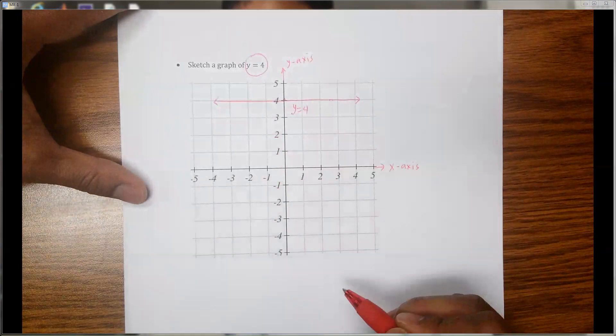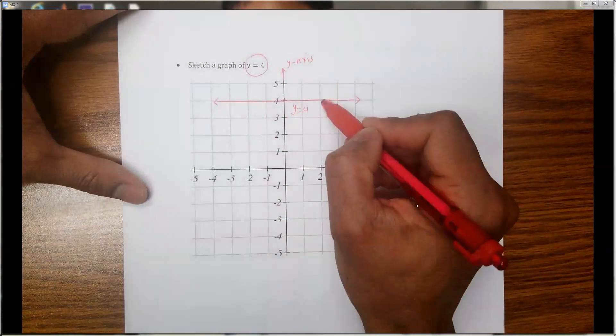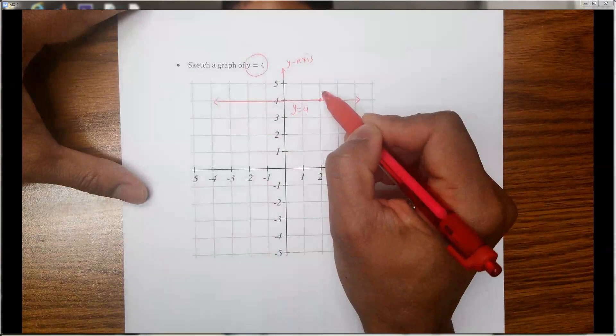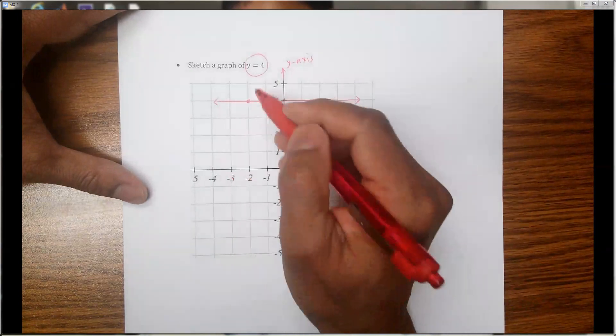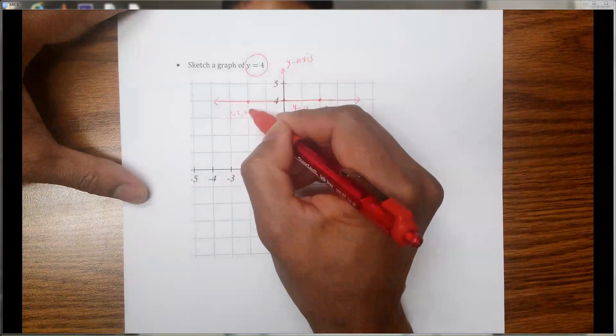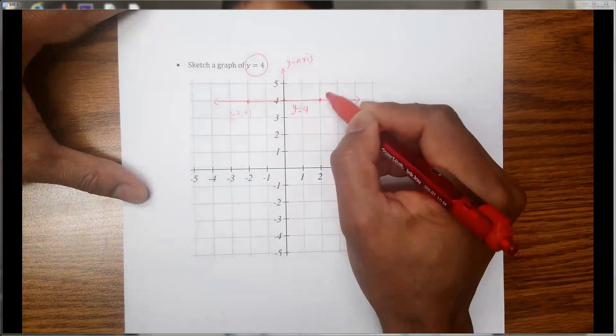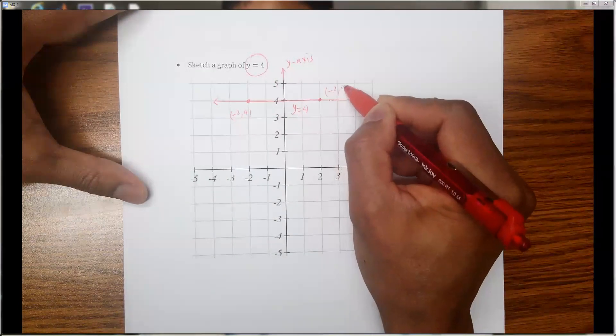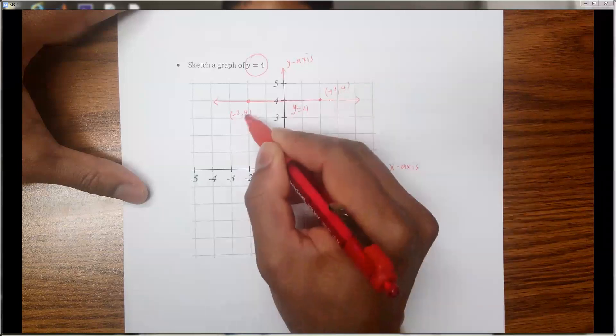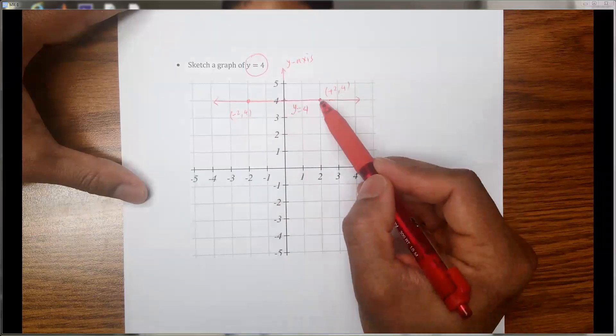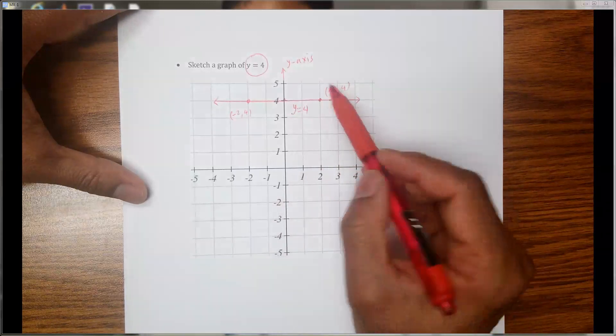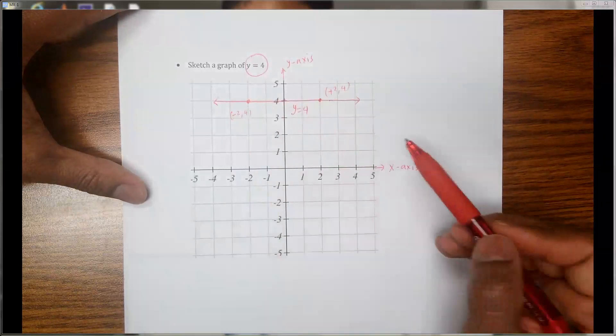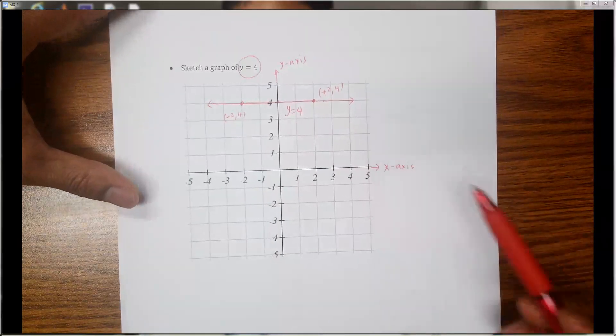If you go anywhere and pick a point, for example let's say here, the y coordinate of that point would be 4. Or maybe here, where you can see that the x coordinate is negative 2 and y coordinate is positive 4. Here x coordinate is positive 2, y coordinate is positive 4. So wherever you go, the y value would be constant.